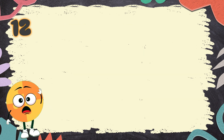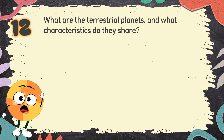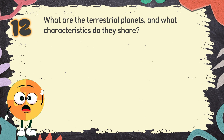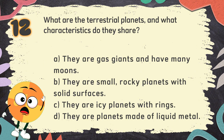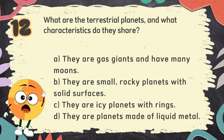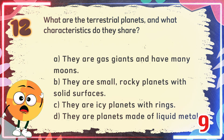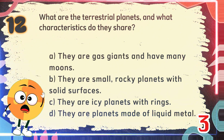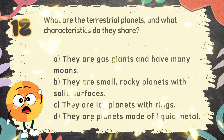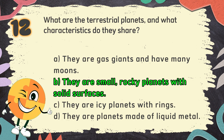Number 12. What are the terrestrial planets and what characteristics do they share? The choices are: A. They are gas giants and have many moons. B. They are small, rocky planets with solid surfaces. C. They are icy planets with rings. D. They are planets made of liquid metal. The correct answer is B: they are small, rocky planets with solid surfaces.